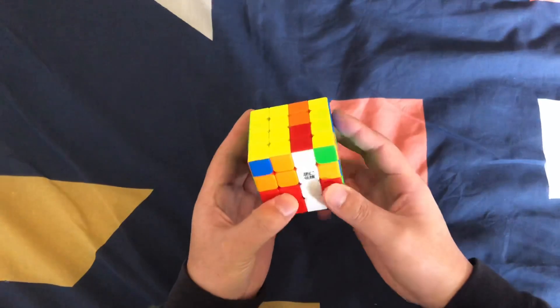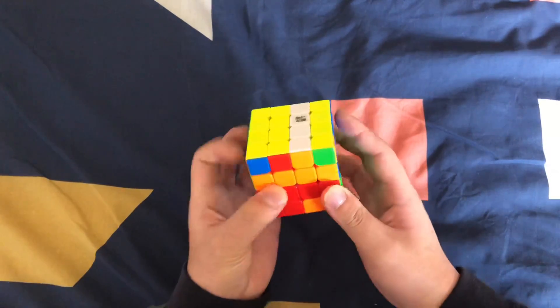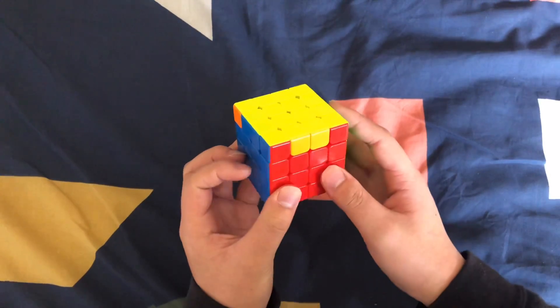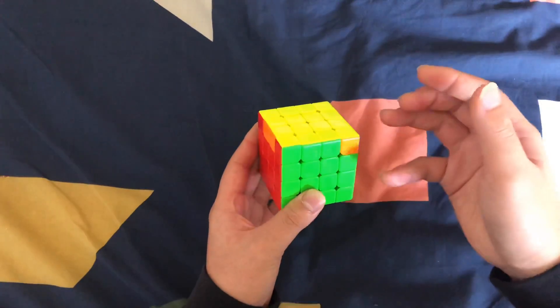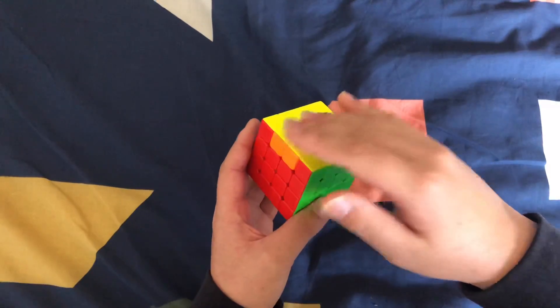And now we have a T-perm. So there are some positives of PLL parity as you can forge a better PLL after you solve the parity.